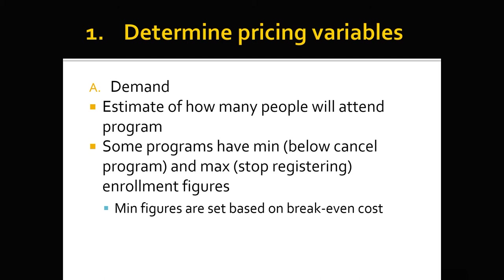For example, at the university, a policy states that an undergraduate program's minimum enrollment is six students, because it would not be cost-effective to run a class with an instructor and all operating costs for fewer than that — there just wouldn't be enough tuition revenue. On the other hand, the maximum for a class like HKR 2000 is 130 students, because there are 130 seats in PE 2001.